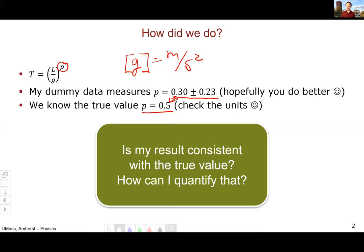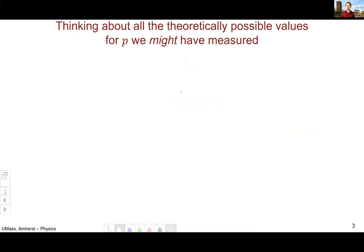And the way we're going to begin is maybe a little weird. We're going to begin by thinking about all the theoretically possible values for p that we might have measured. If we had done this exact same experiment a bajillion times, we would get a different value for p each time we did that experiment.